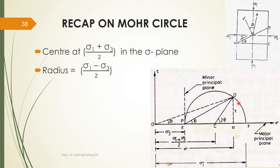In this video we will be discussing some problems based on Mohr's circle and direct shear test. We will have a quick recap on Mohr's circle. The center of the Mohr's circle is at (σ₁ + σ₃)/2 on the sigma plane — that is, from the origin to the center of the Mohr's circle, the distance is (σ₁ + σ₃)/2.